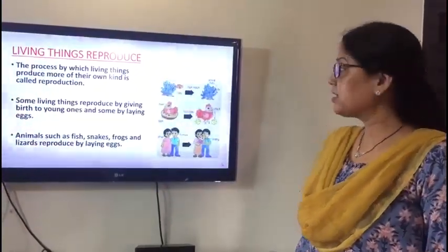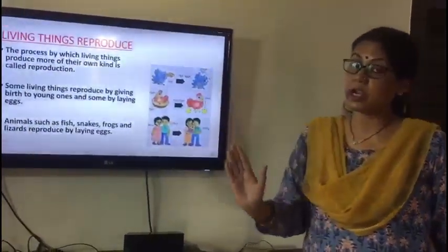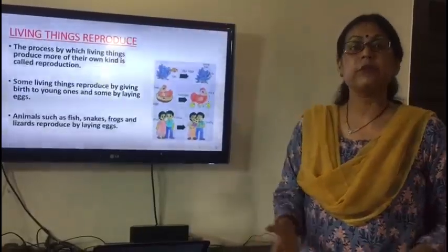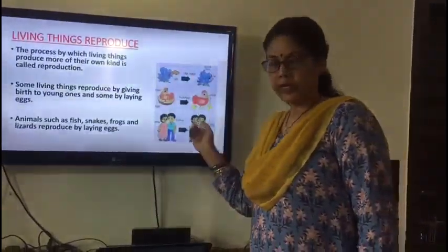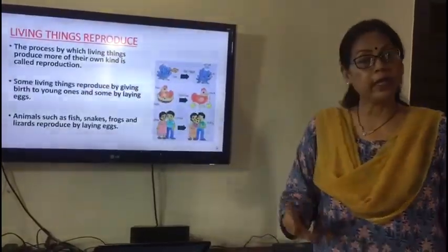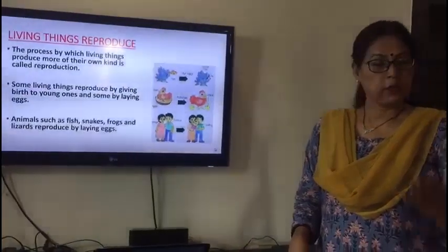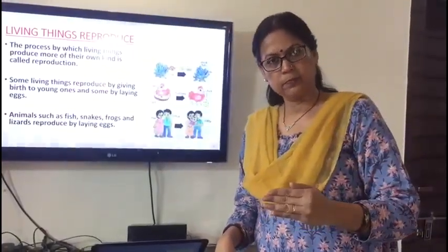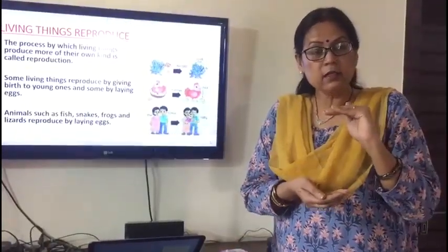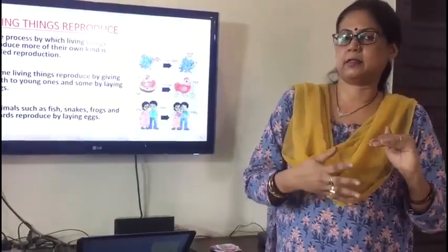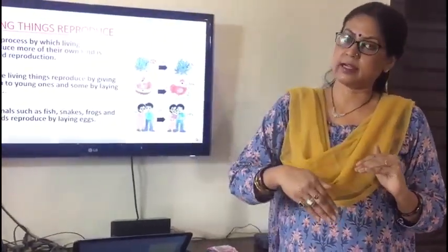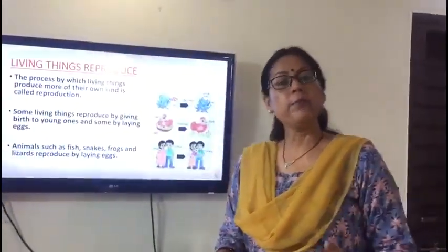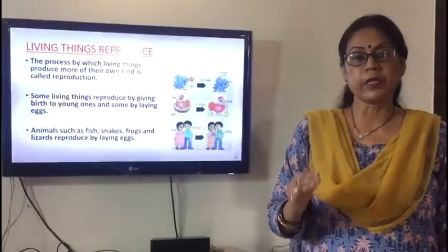The next feature is that living things reproduce. The process by which living things produce more of their own kind is called reproduction. You are the baby of your parents and you look like them — they have reproduced you. A kitten looks just like its parent cat. When a living thing produces its same kind, it is called reproduction, and this is a very important feature of a living thing.